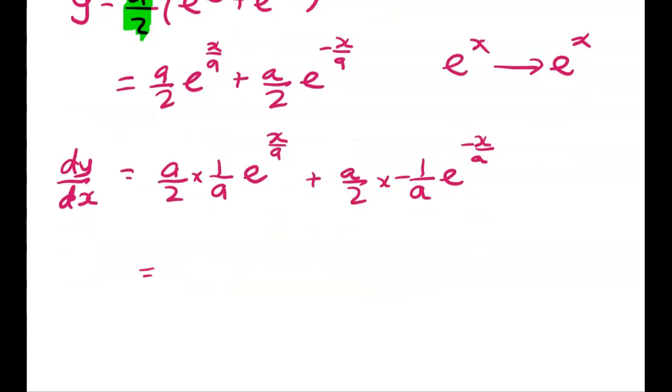Right, so we're going to clean that up a bit, and we get 1 half e to the x over a, or no sorry, not plus, minus 1 half e to the negative x over a.